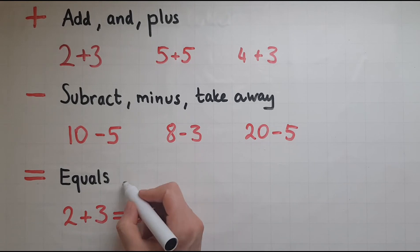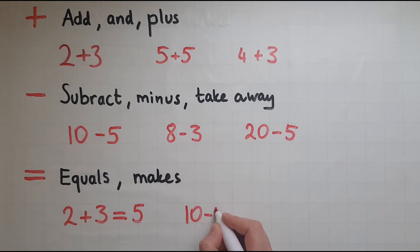Another word for equals is makes. So 10 take away 5 makes 5. Or is 5. So 2 plus 3 is 5.